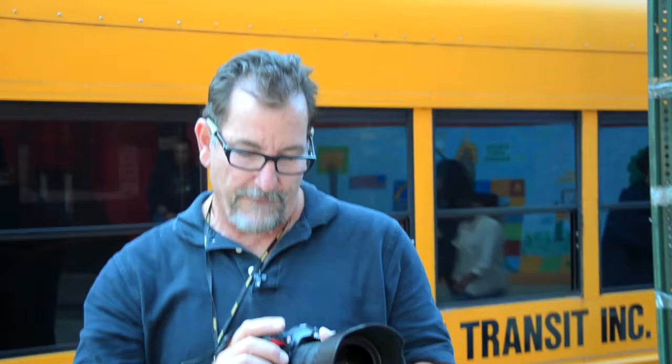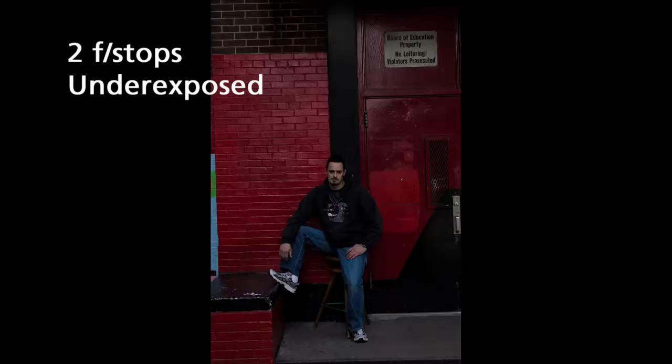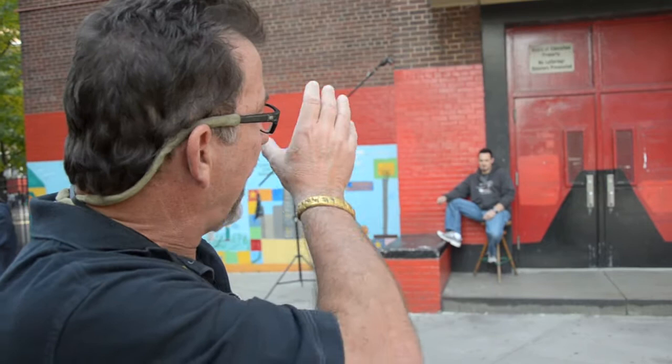That doesn't look like nighttime to me. If I underexpose it by about two stops, we're going to get something that looks like this. Now what we're going to do is light up the strobes, and it's going to look like an evening shot with a task light — some sort of lamp coming down on our musician.